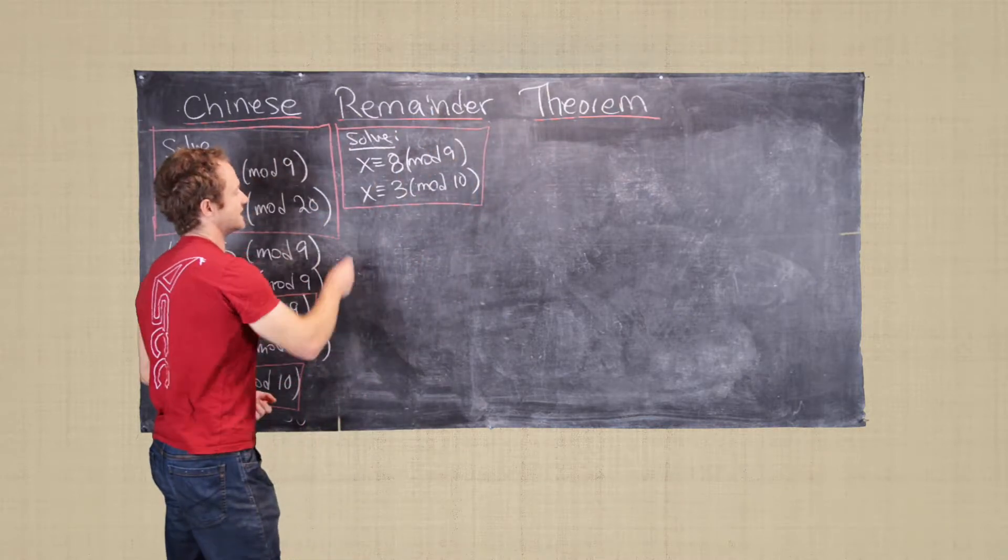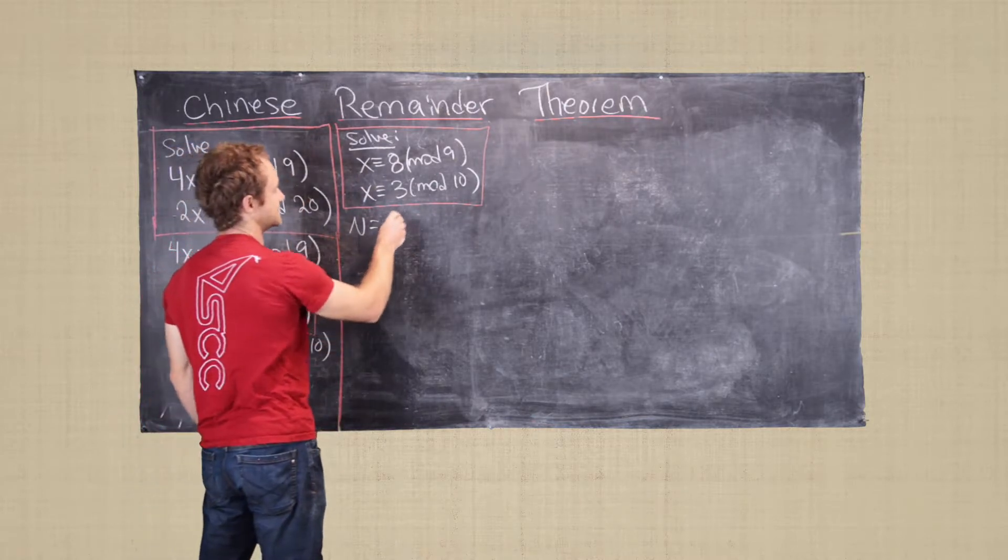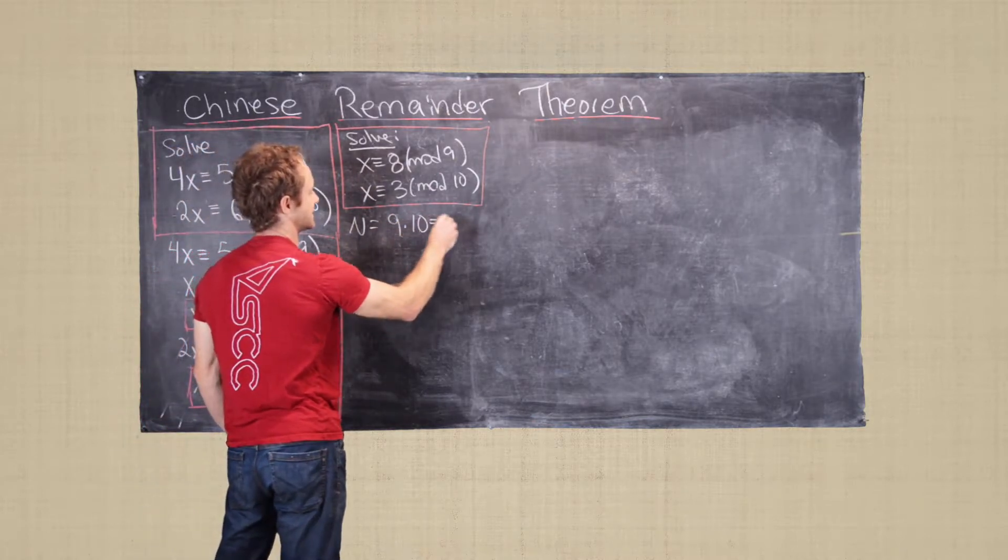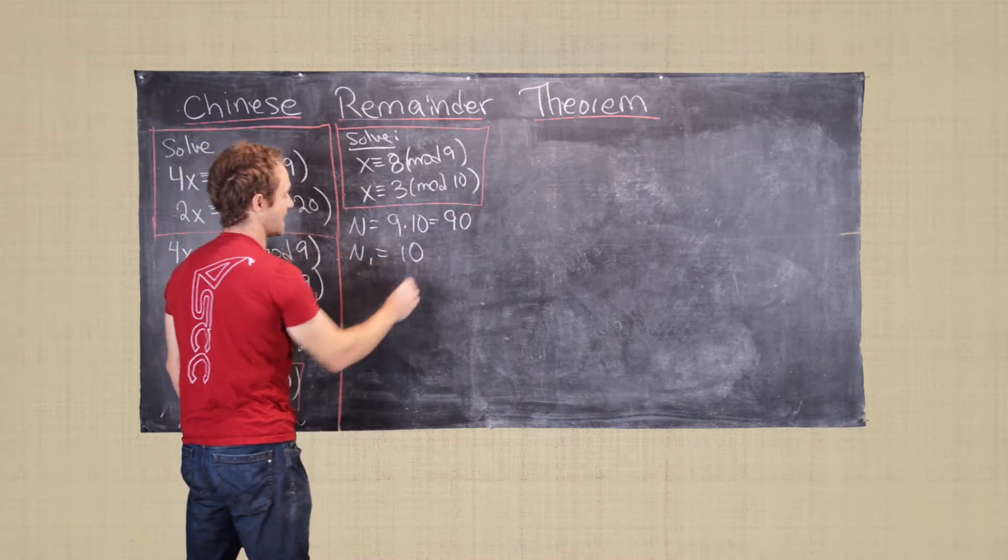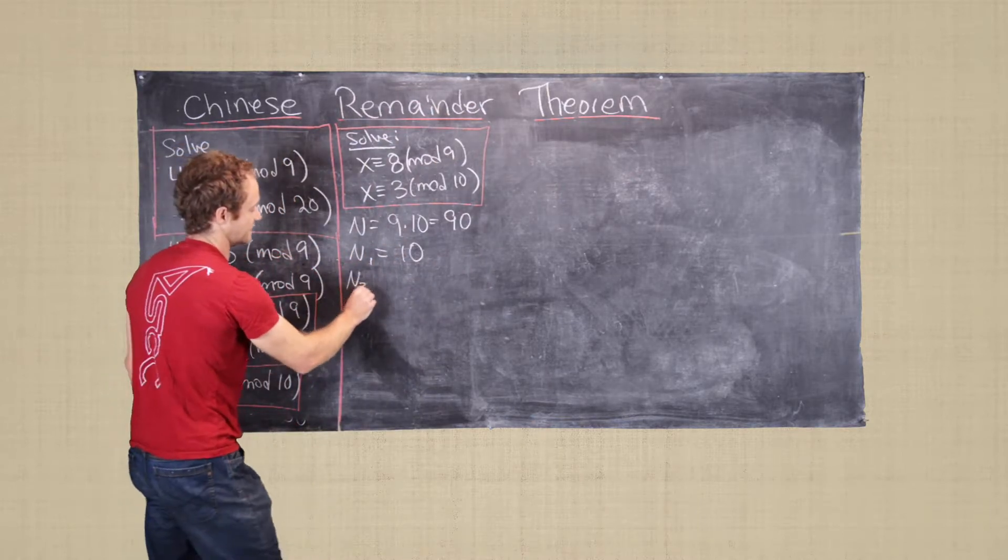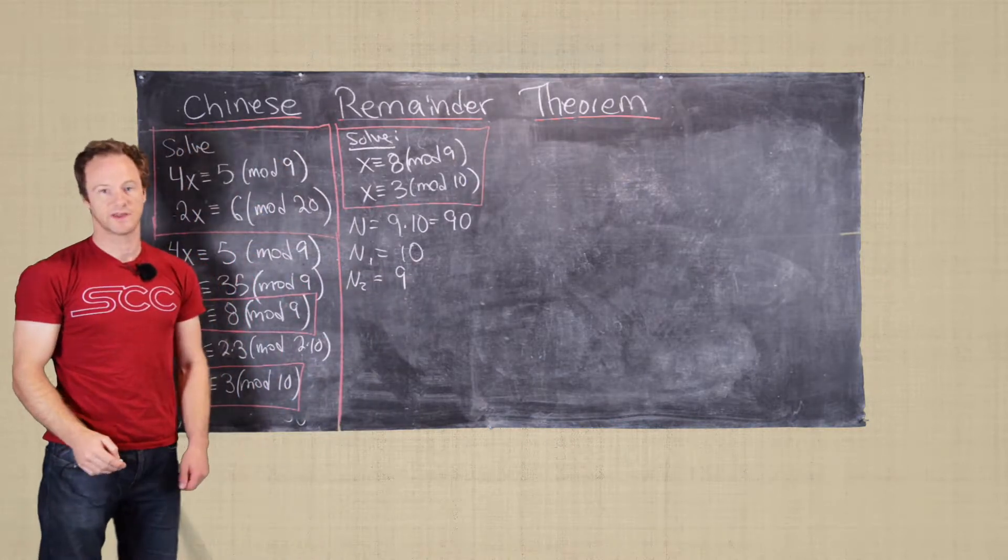So we need to set capital N equal to the product 9 times 10, so that's 90. And then capital N1 will be 10, and then capital N2 will be 9.